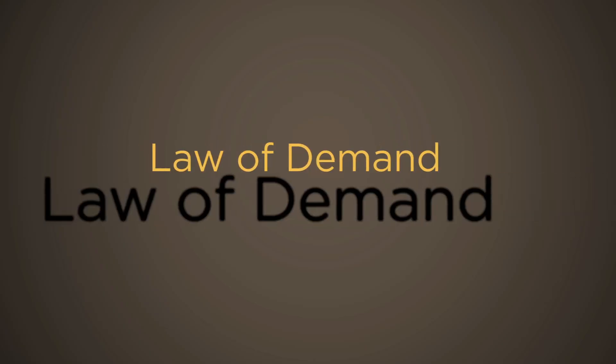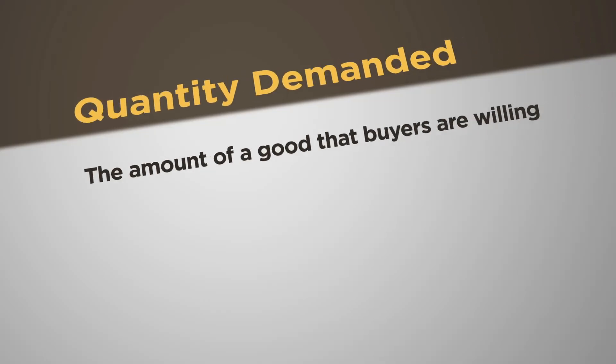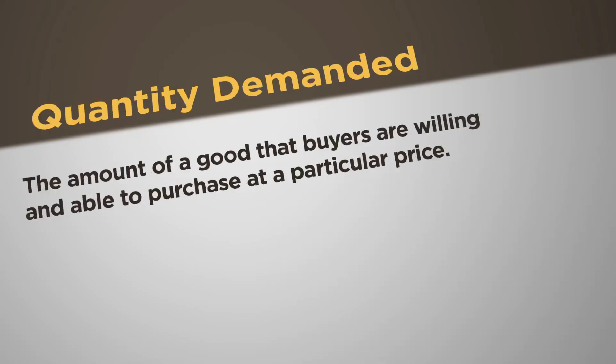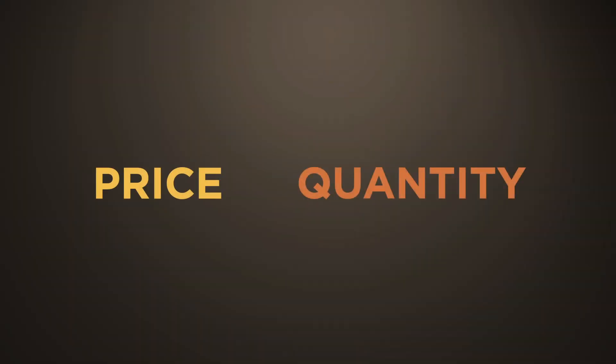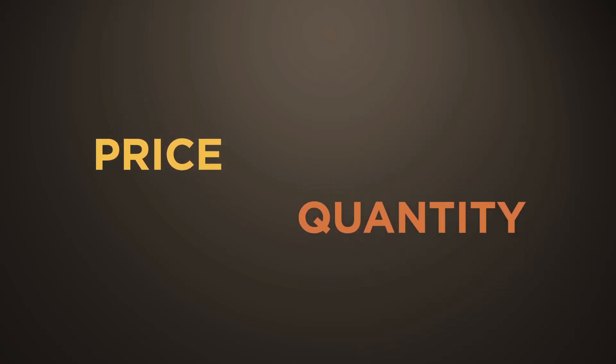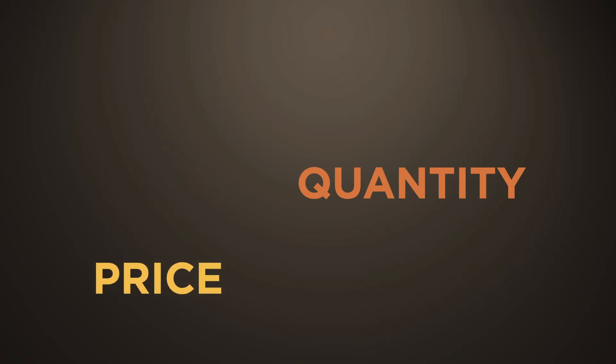Law of Demand. Quantity demanded is the amount of a good that buyers are willing and able to purchase at a particular price. Many things determine demand, but only price can determine the quantity demanded of a specific good. The Law of Demand states that, other things being equal, when the price of a good rises, the quantity demanded of that good falls. The reverse is also true. When the price of a good falls, the quantity demanded rises. Economists refer to the relationship between price and quantity demanded as the Law of Demand.